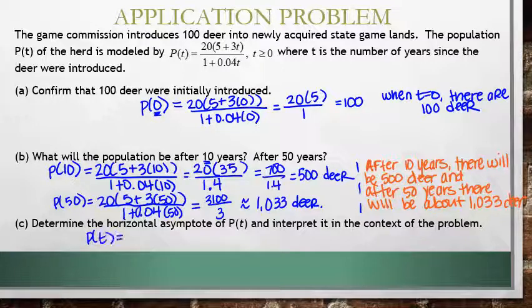I'm going to actually first expand out the numerator so that I can see what that leading term is. So when I expand that out, I get 20 times 5, which is 60t, all over 1 plus 0.04t.